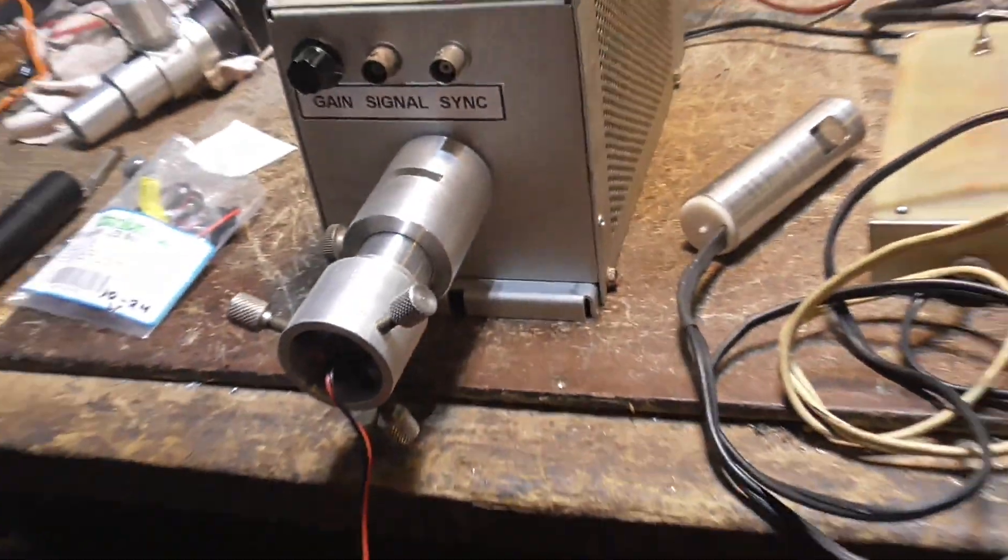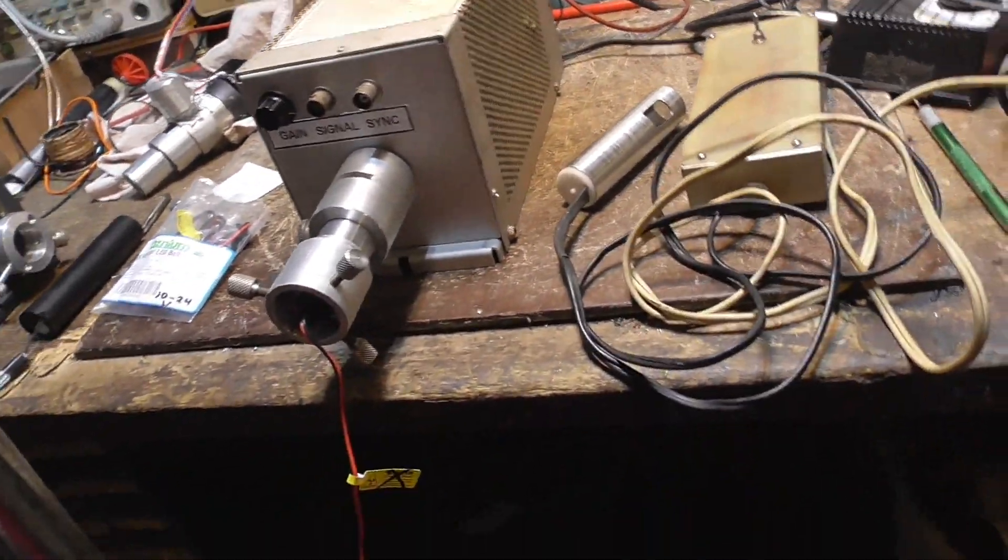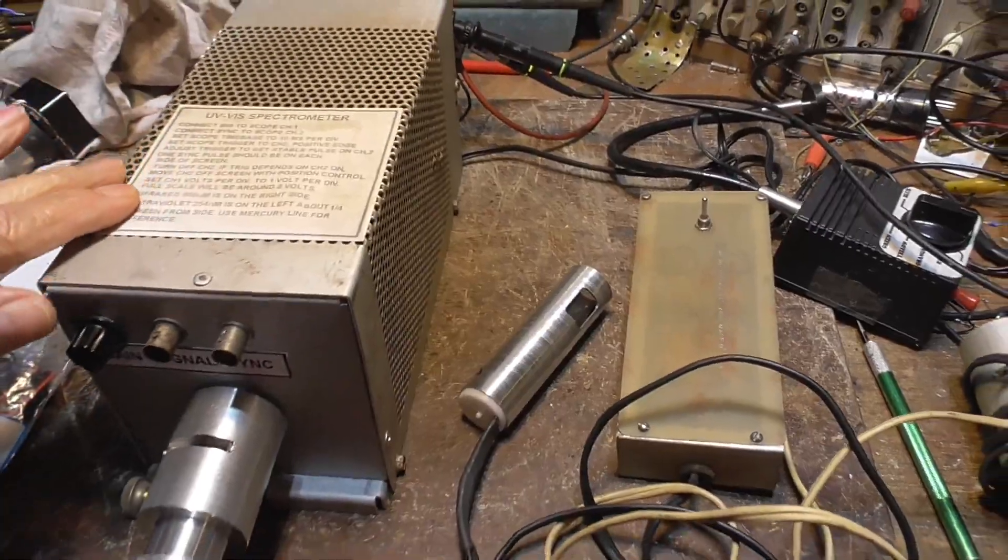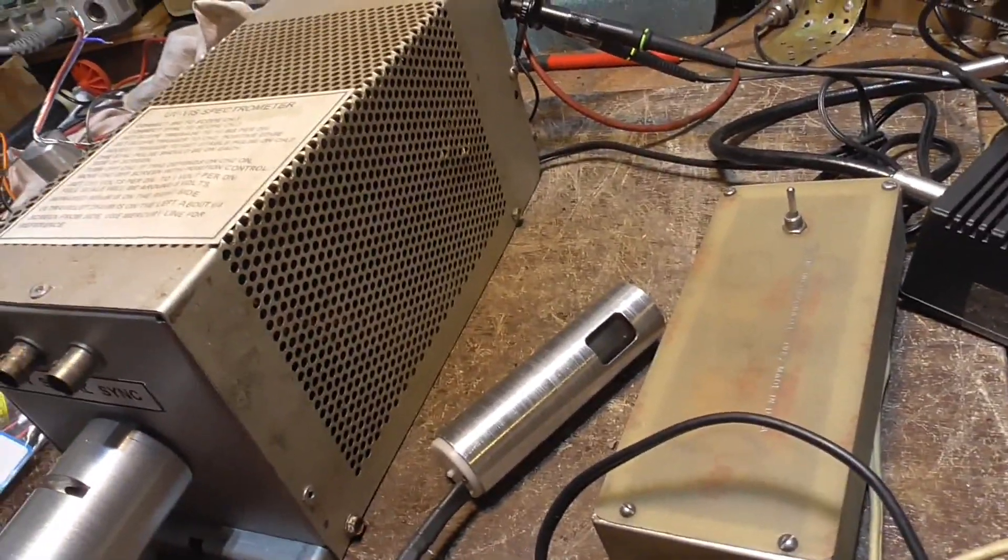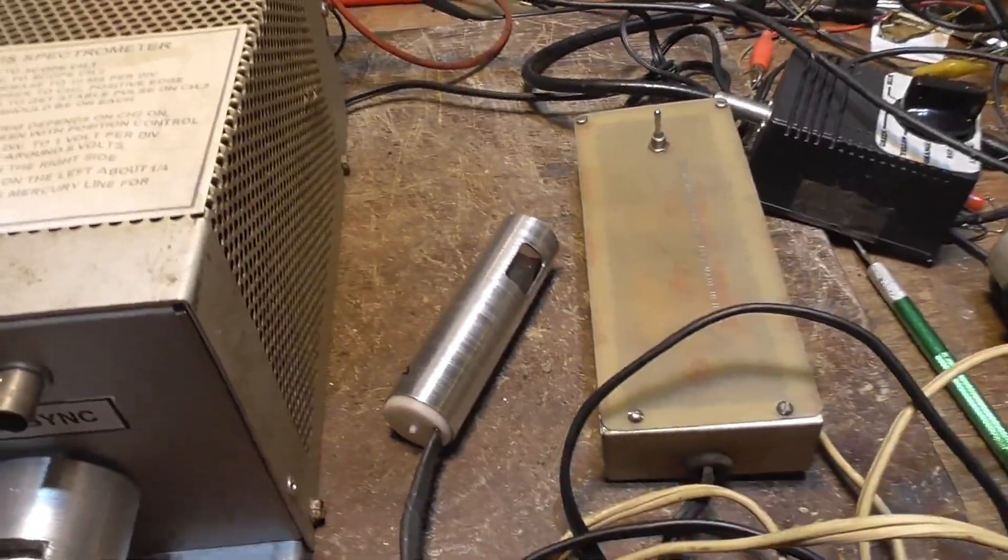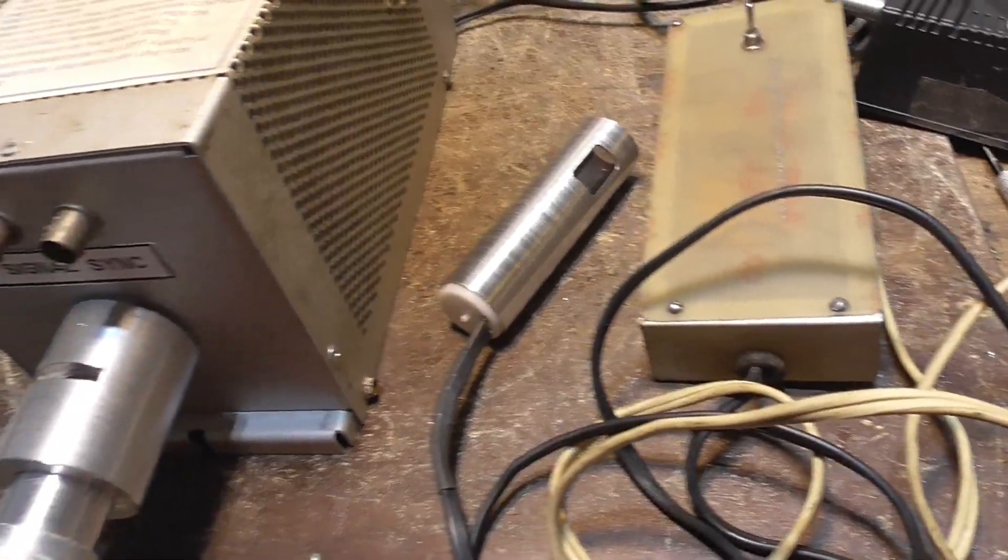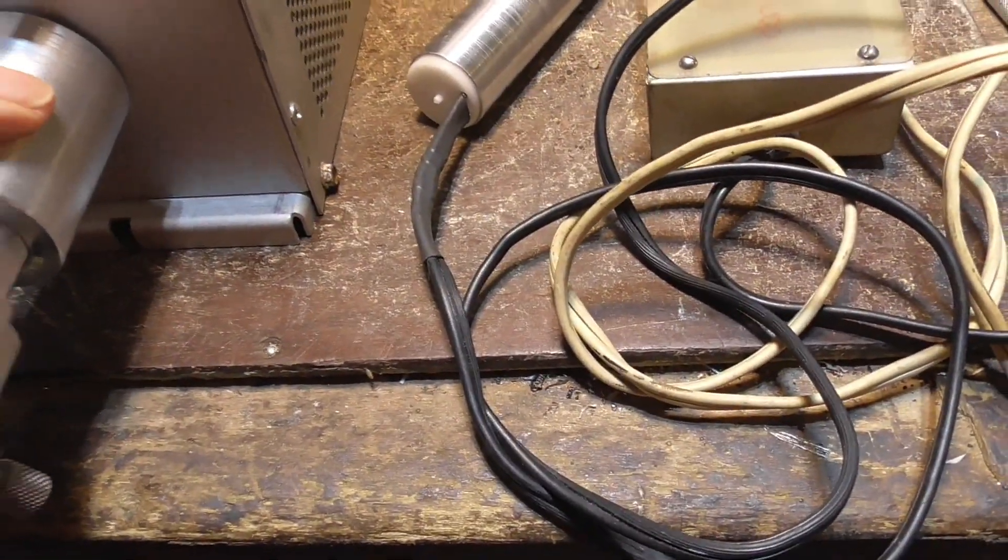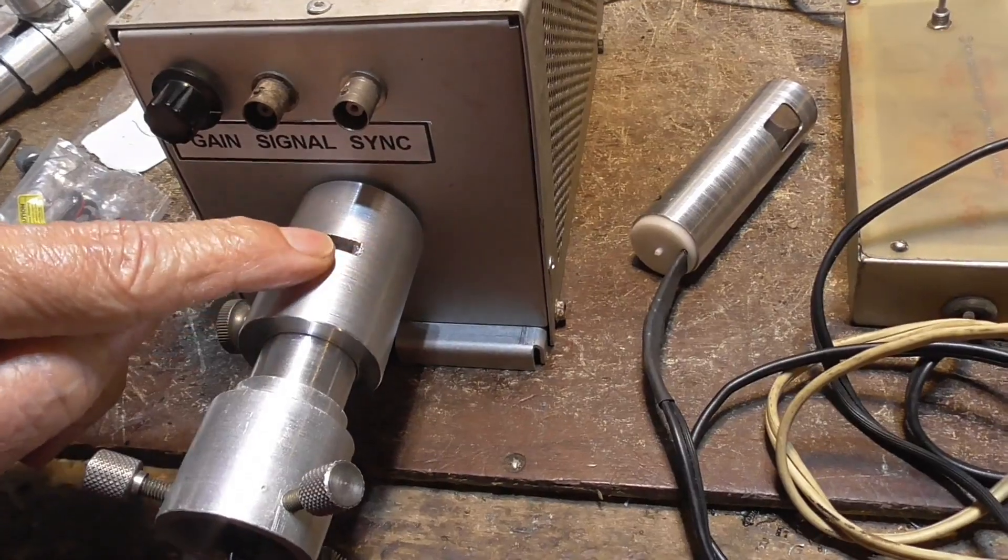Here is the setup. We've got the spectrometer. It's just a box that's about half the size of a shoe box. This is the input, the light input.